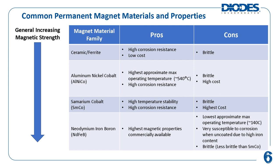Neodymium iron boron magnets use neodymium in their construction, also a rare earth element. These are the strongest of the available magnet materials but have generally low maximum operating temperature. Neodymium magnets require a coating around them, or else they are very susceptible to corrosion.